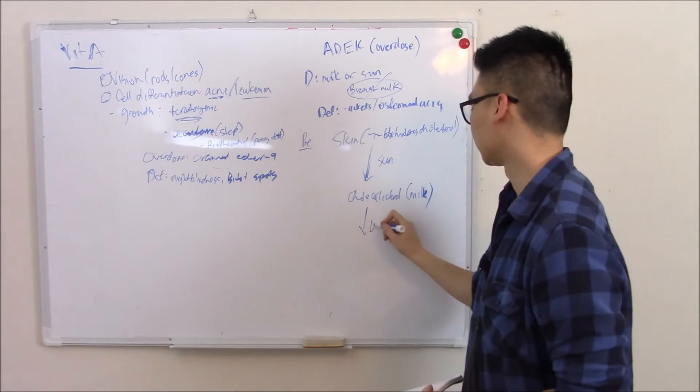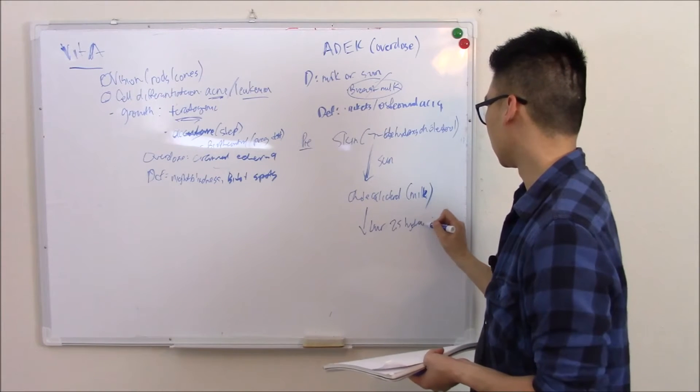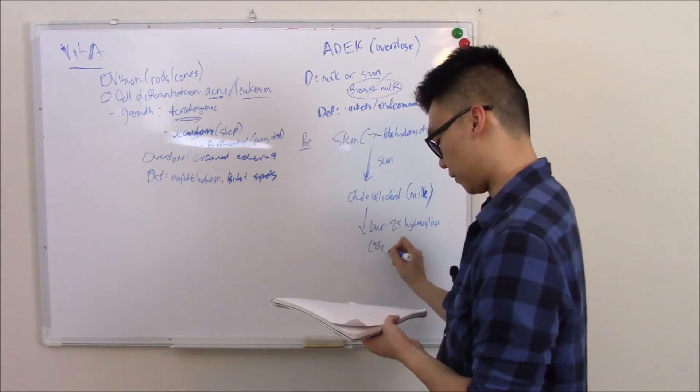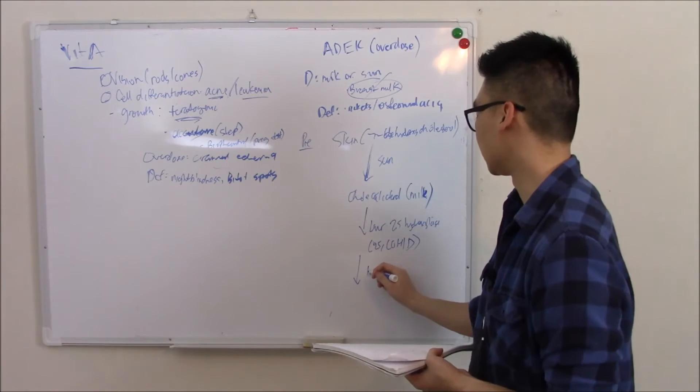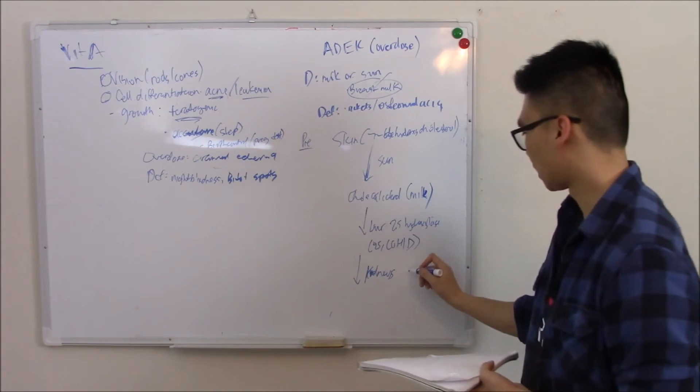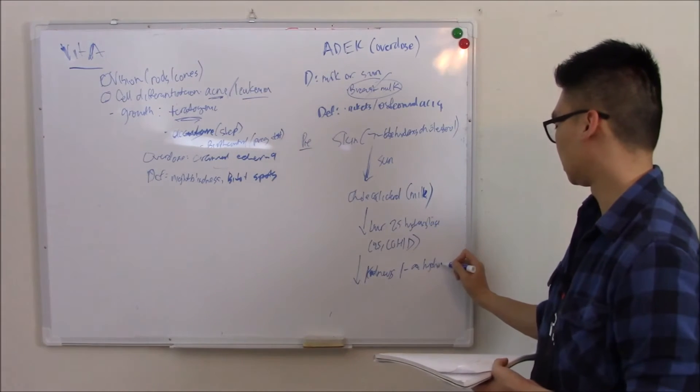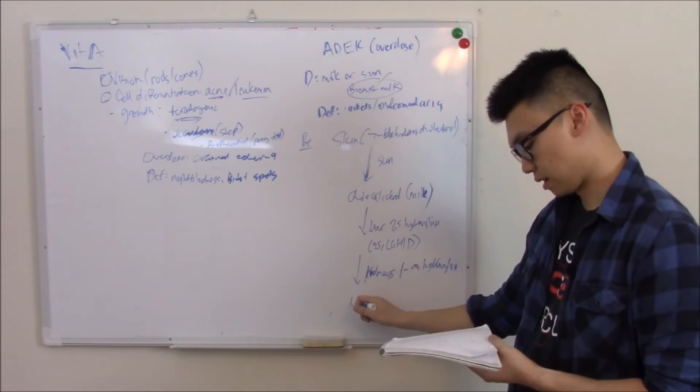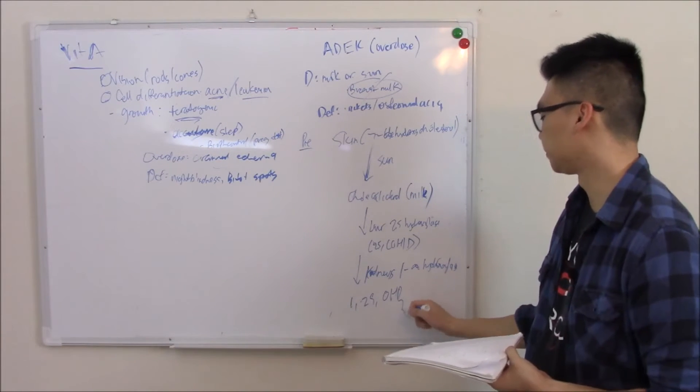We're still not active vitamin D. We need a few more steps. The next step will be in your liver, via something called 25-hydroxylase. Judging by the name, it turns into 25-OH-D. And the last and final step is in your kidneys, via an enzyme called 1-alpha-hydroxylase. And that 1-alpha-hydroxylase turns it into 1,25-OH-D2.